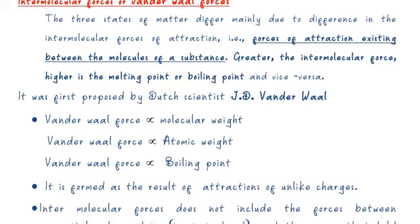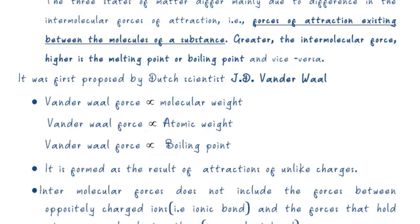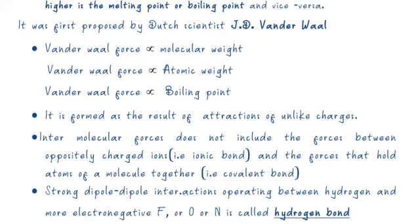Van der Waals forces were first proposed by a Dutch scientist called Johannes Diderik van der Waals. Van der Waals force is directly proportional to molecular weight, atomic weight, and boiling point. It is formed as a result of attraction of unlike charges. Intermolecular forces do not include forces between oppositely charged ions (ionic bonds) or forces that hold atoms of a molecule together (covalent bonds). Strong dipole-dipole interactions between hydrogen and highly electronegative atoms like fluorine, oxygen, and nitrogen are called hydrogen bonding.